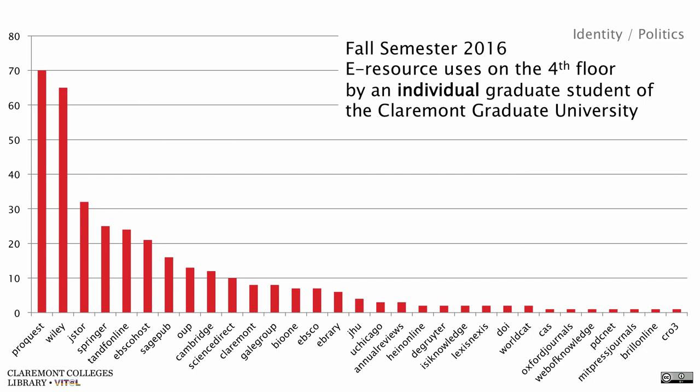This is eResource uses on the fourth floor by graduate students of the Claremont Graduate University. They use EBSCOhost a lot — that's not a big surprise, we have a lot of stuff licensed under EBSCOhost. They're going through OCLC, which is either catalog use or ILLiad, then JSTOR use, Ebrary use, ProQuest use. That's good to know. This has a huge long tail — I cut it off at 20.